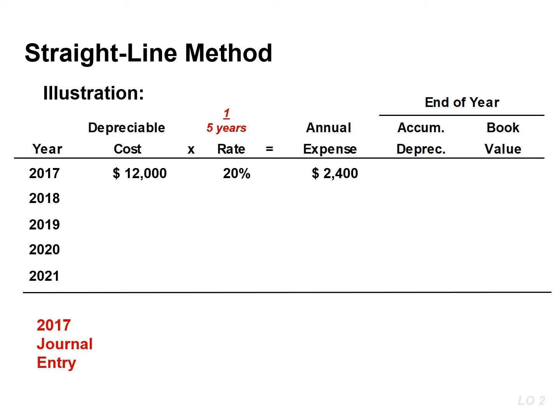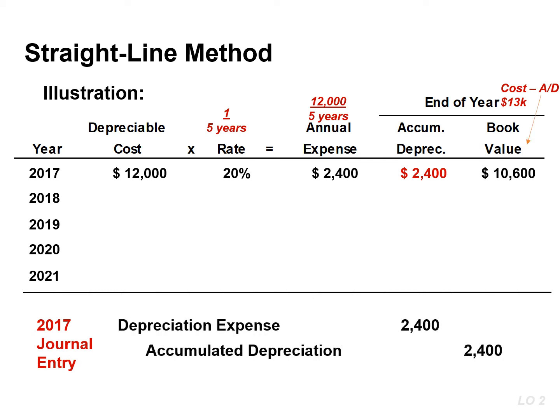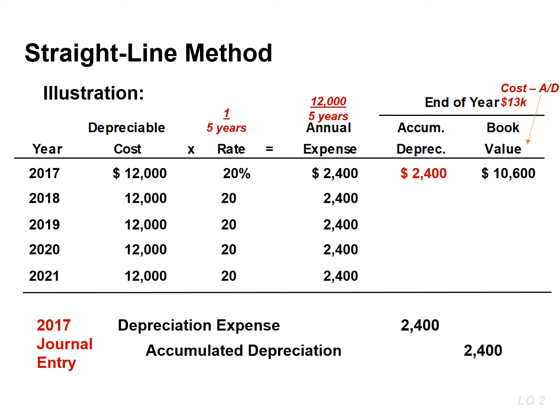The other approach simply divided the depreciable cost by 5 years. Accumulated depreciation is $2,400, and the book value is $10,600, found by taking the cost of $13,000 and subtracting accumulated depreciation of $2,400. The journal entry to record depreciation expense results in a debit to depreciation expense and a credit to accumulated depreciation for the same amount. It is important to note the annual depreciation expense is the same amount each year, which is $2,400. Accumulated depreciation will increase and the book value will decrease by that amount each year.